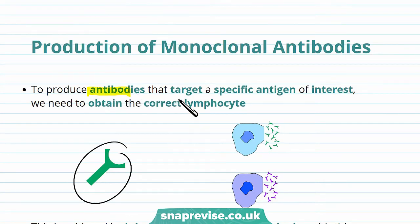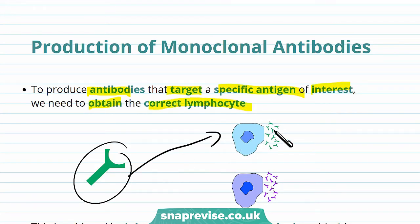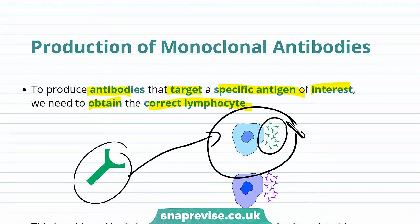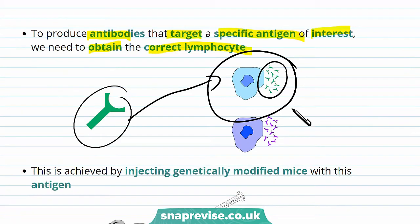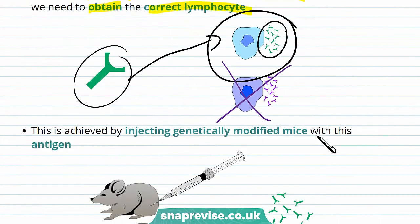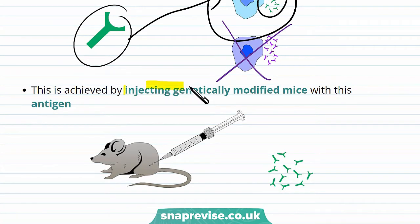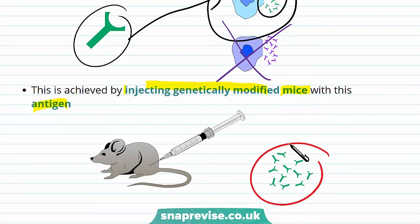To produce antibodies that target the specific antigen of interest we need to obtain the correct lymphocyte — a specific B lymphocyte that produces specific antibodies that bind to a specific antigen. We don't want B lymphocytes that don't produce the right antibodies. To get the right ones, this is achieved by injecting genetically modified mice with this antigen. The goal is to produce antibodies to bind with this antigen.